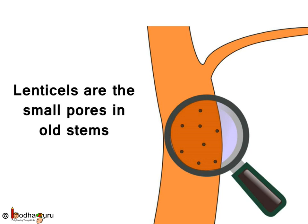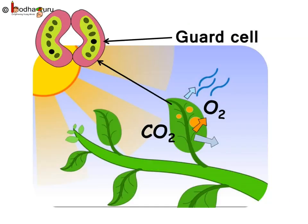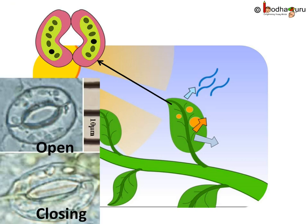These lenticels are also used for gaseous exchange. Now, the gaseous exchange needs to be controlled, or else large amounts of water would be lost as vapor through these pores. So there is a mechanism in place to close the stomata pores when not required.